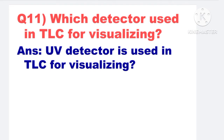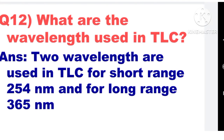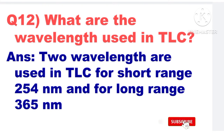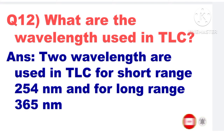Next: Which detector is used in TLC for visualizing? A UV detector is used in TLC for visualizing. Next: What are the wavelengths used in TLC? Two wavelengths are used in TLC: for short range, 254 nanometers, and for long range, 365 nanometers.